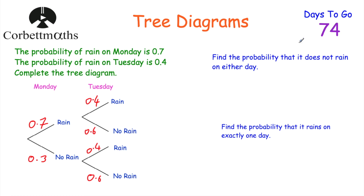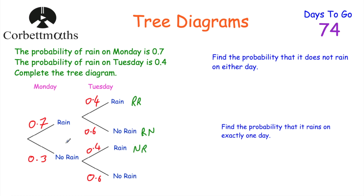We've got some probability questions based on the completed tree diagram. Before answering, I'll list all the outcomes: rain and rain, rain and no rain, no rain and rain, and no rain and no rain. Now let's find the probabilities: rain and rain = 0.7 × 0.4 = 0.28; rain and no rain = 0.7 × 0.6 = 0.42; no rain and rain = 0.3 × 0.4 = 0.12; no rain and no rain = 0.3 × 0.6 = 0.18.